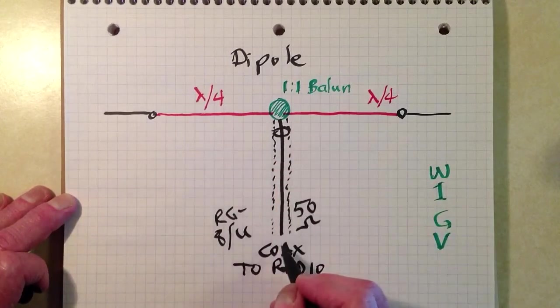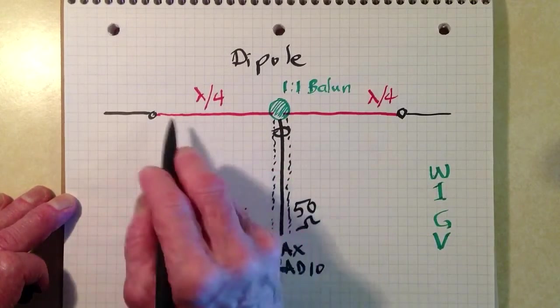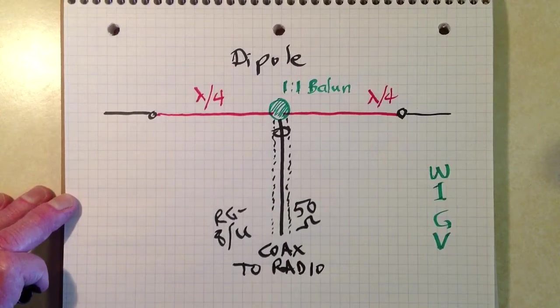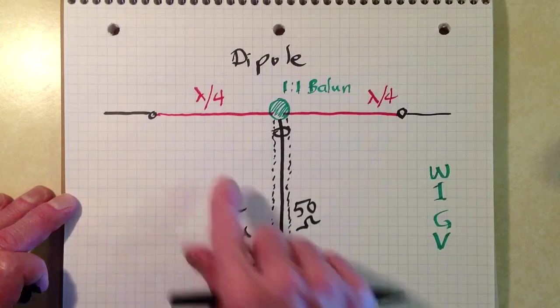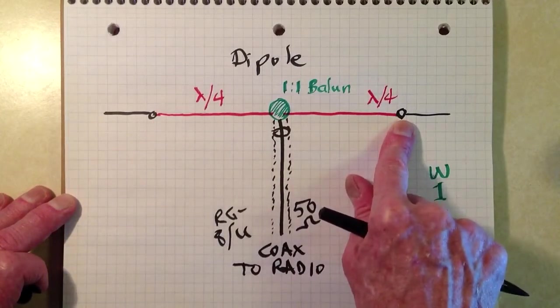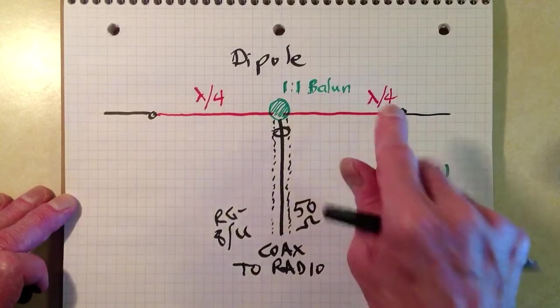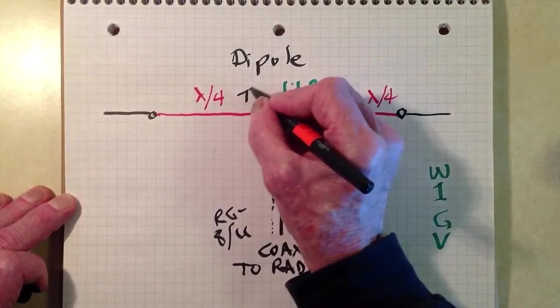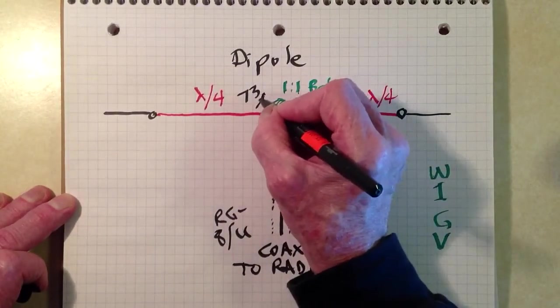This feed line should run away from the antenna at a 90 degree angle for at least a quarter of a wavelength and preferably a half a wavelength or more for best results. So this is a horizontal radiating element all in a straight line. And when you do that you have a feed point impedance of roughly 73 ohms.